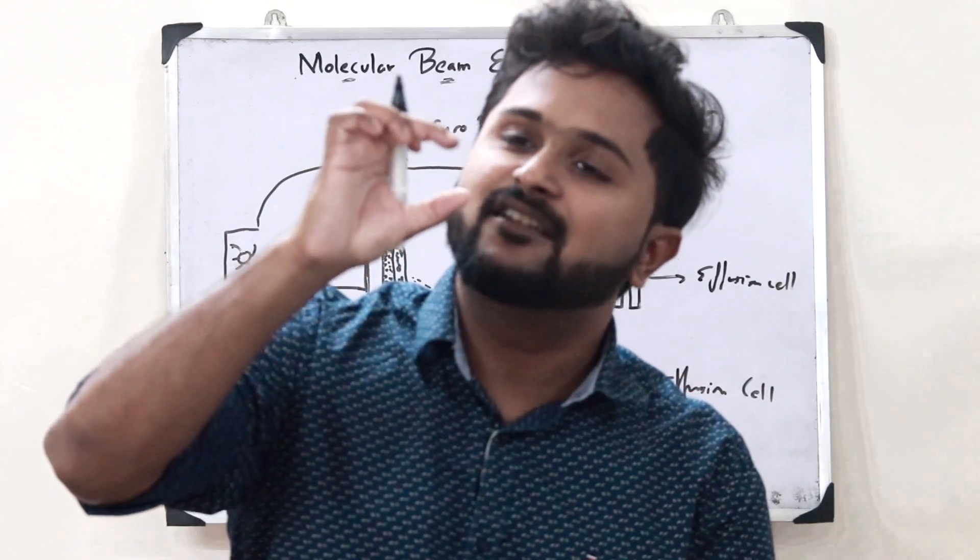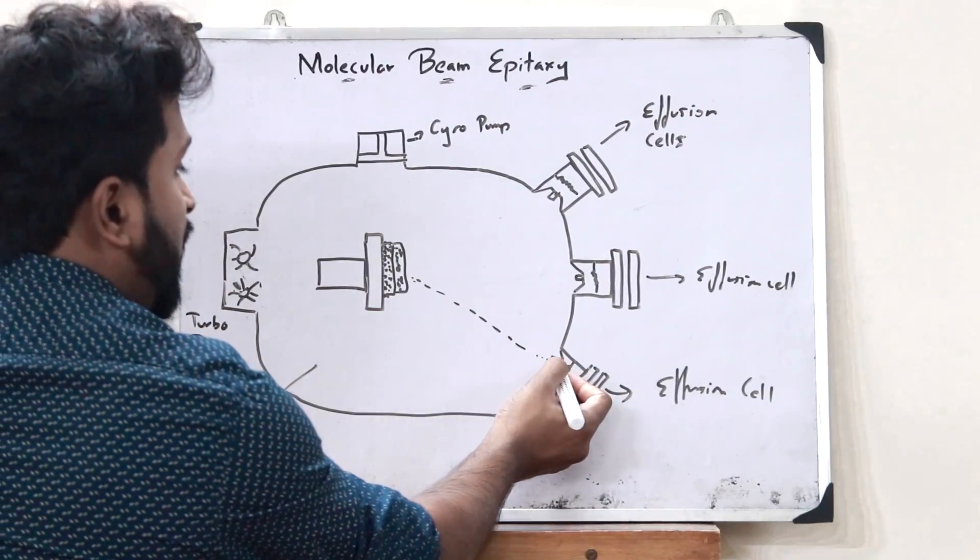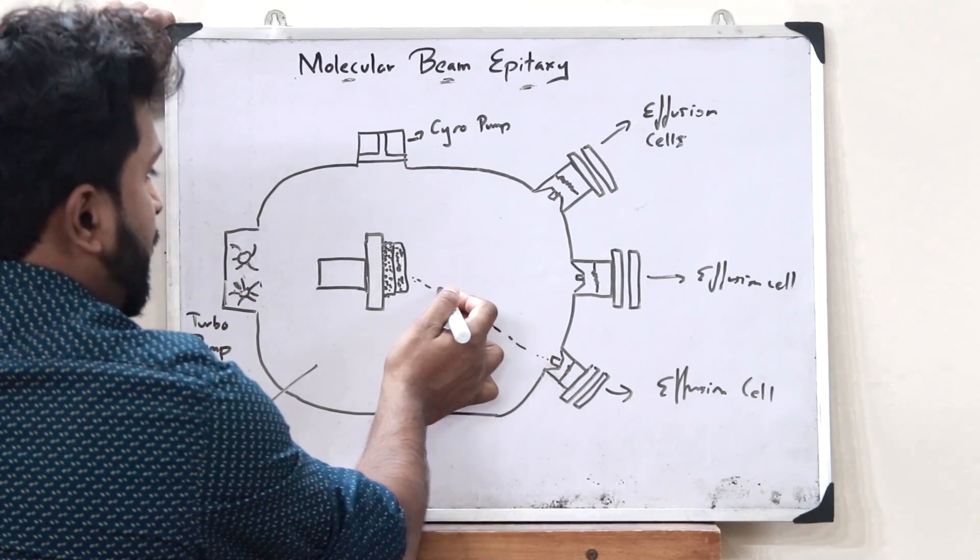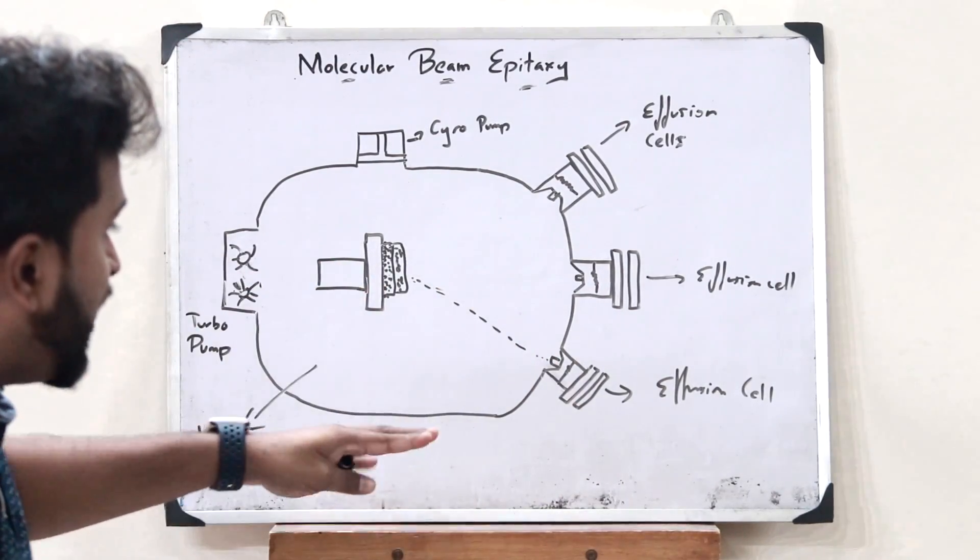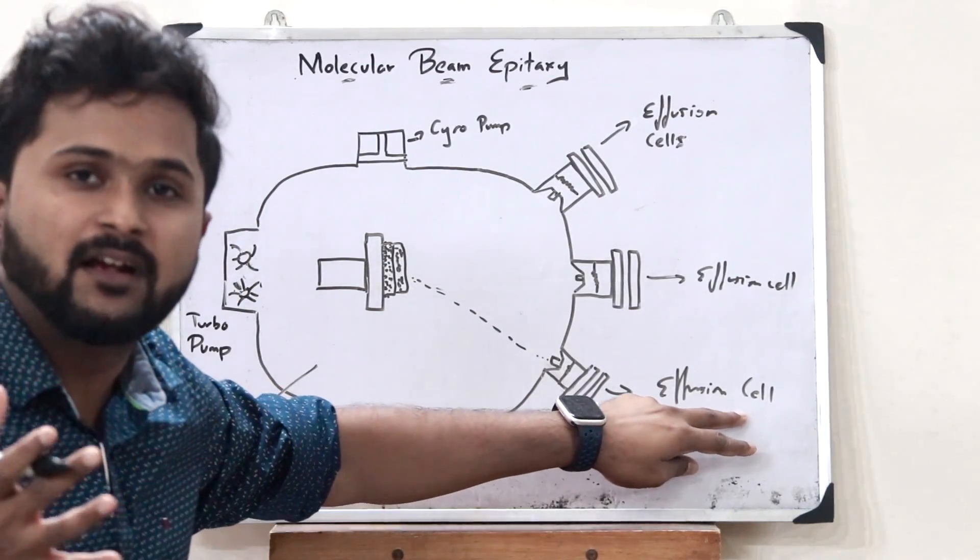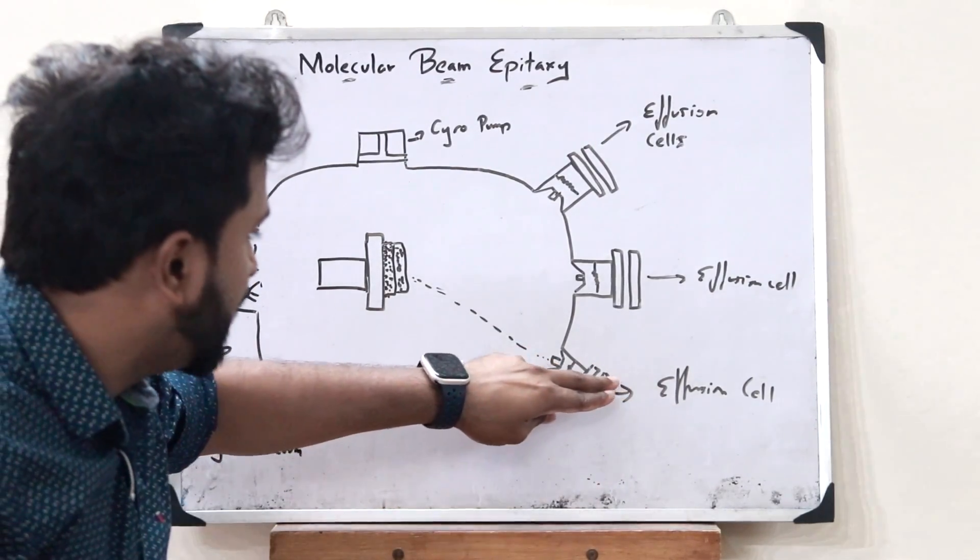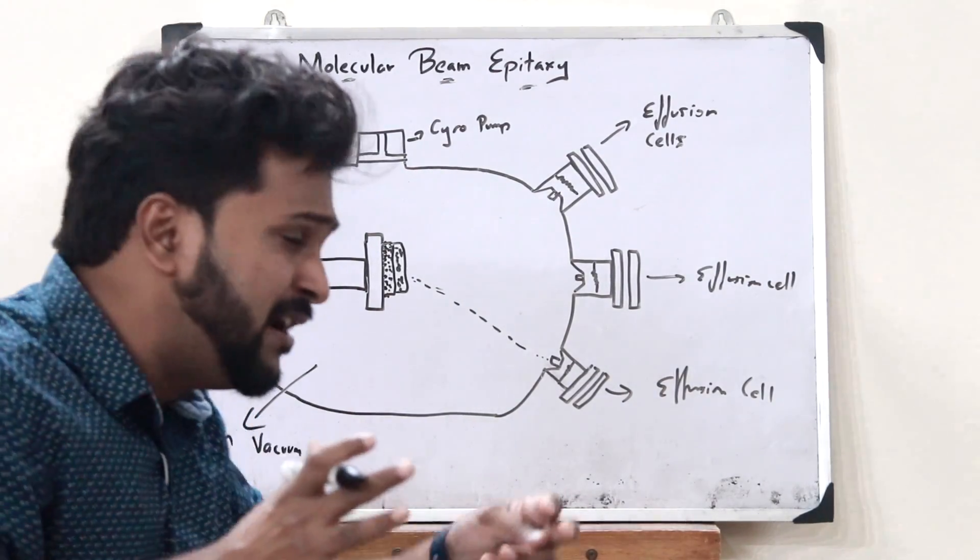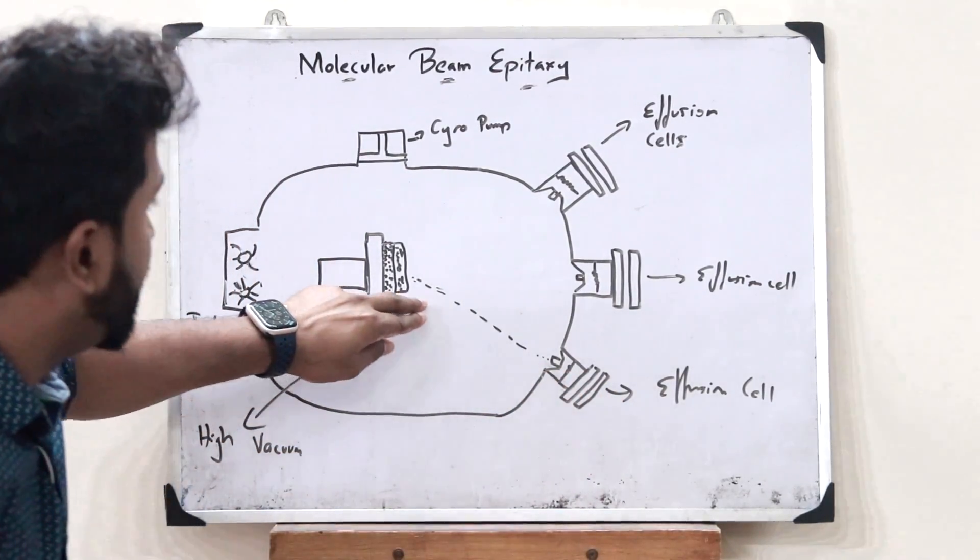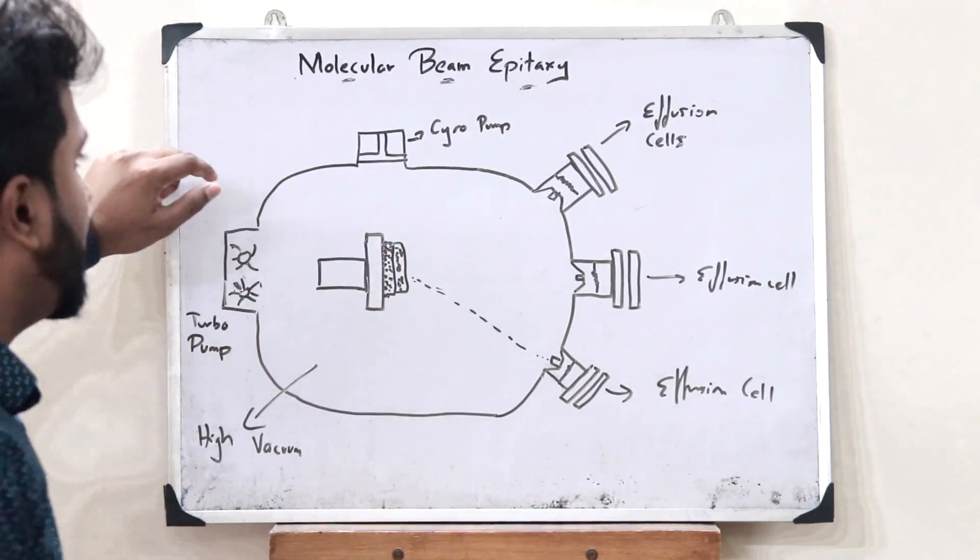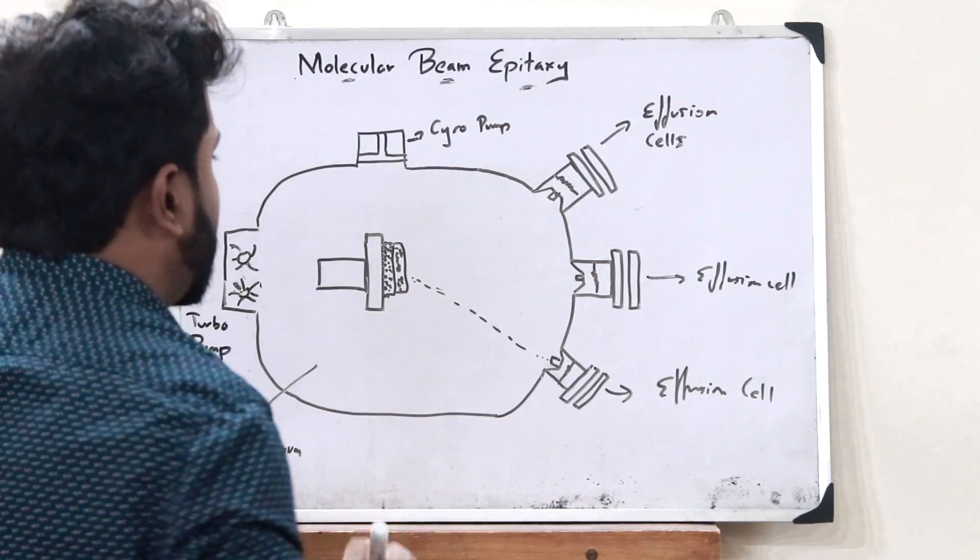So using this method, very thin films can be achieved because the molecules come out of the evaporator or effusion cell in a beam. And also the rate at which the molecules come out of this particular effusion cell can also be controlled just by controlling the temperature of this particular effusion cell. So therefore, this is a simple direct deposition process. That is, these molecules are directly deposited on top of this particular crystalline substrate.